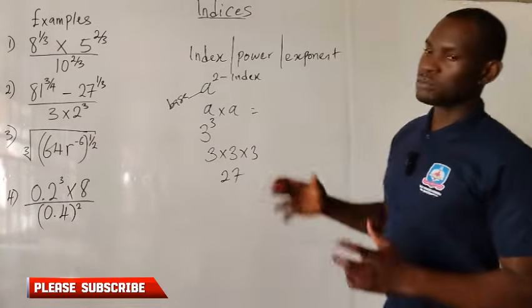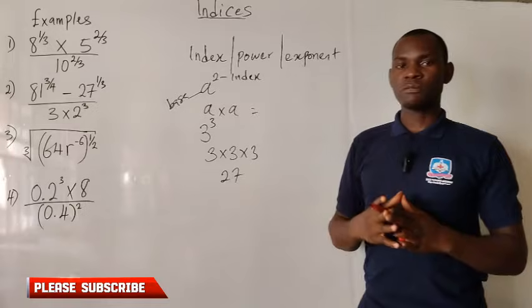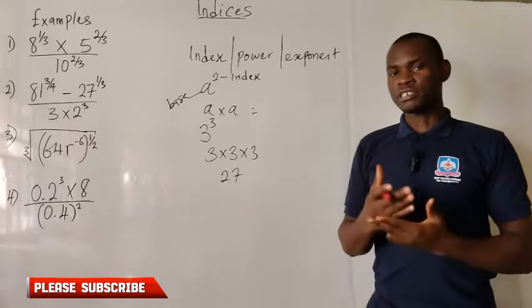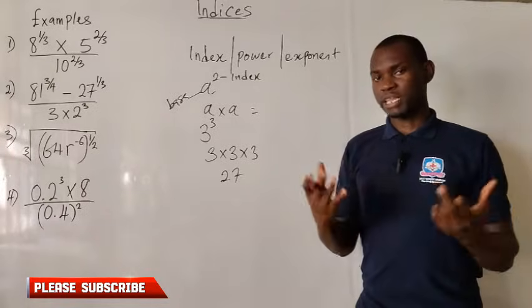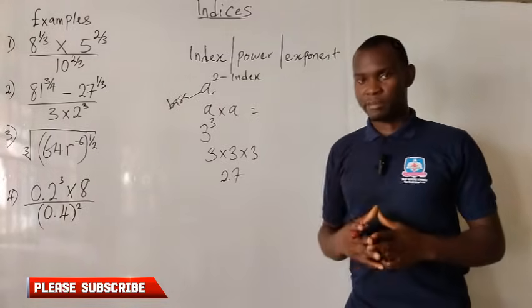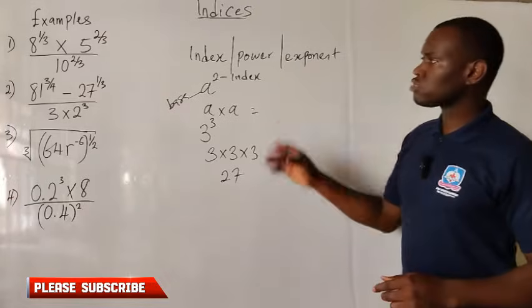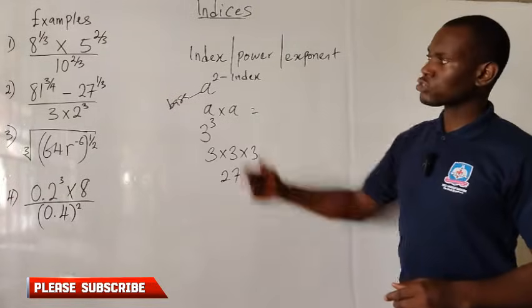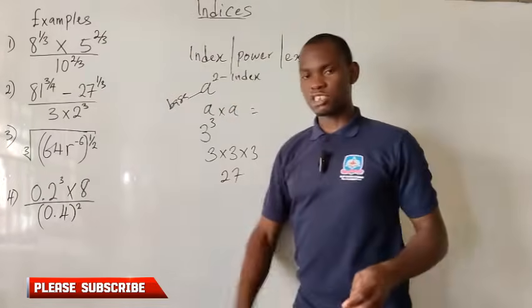So indices helps us know the number of times a base or a particular number will multiply itself to obtain a particular product. We shall now consider the laws of indices, after which we will simplify these problems.